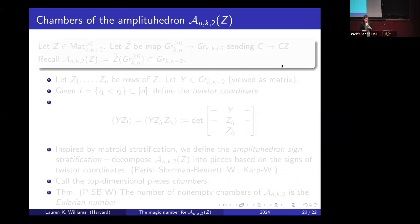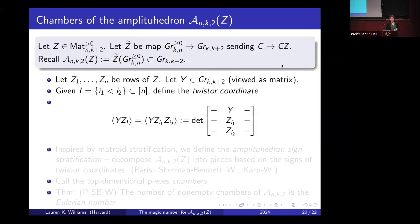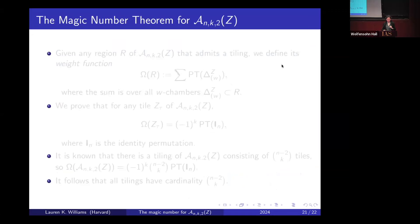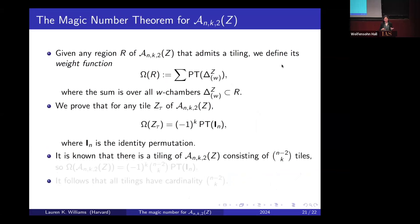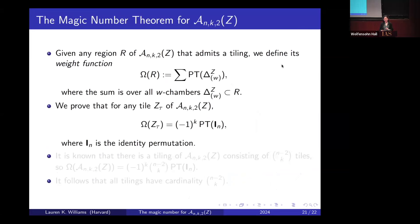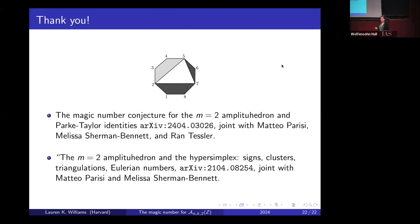I'll skip the chambers discussion due to time. The key slide explains how to get the Parke-Taylor factor associated to any tile and to the amplituhedron. The main idea is to show that for every tile, its Parke-Taylor function has the constant value (-1)^k times the Parke-Taylor factor of the identity permutation. Thank you very much — here are the two references.